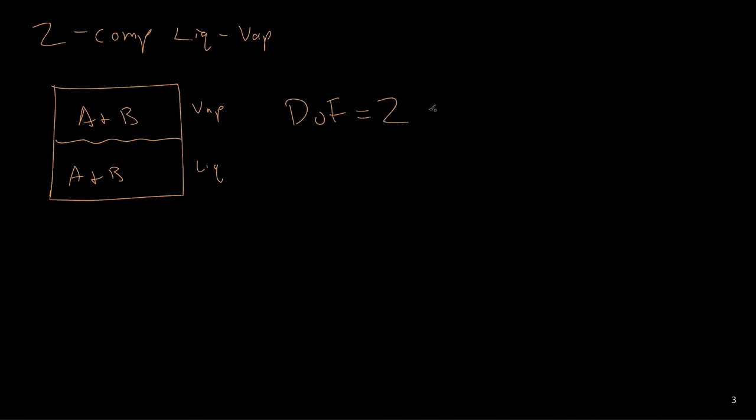If we have a two-component liquid-vapor system, that would mean we have potentially a mixture of A and B in a liquid, and we have some A and B in the vapor phase. So if we were to do the degrees of freedom analysis, we would have 2 plus the number of components, 2, minus the number of phases, which gives us 2 degrees of freedom.